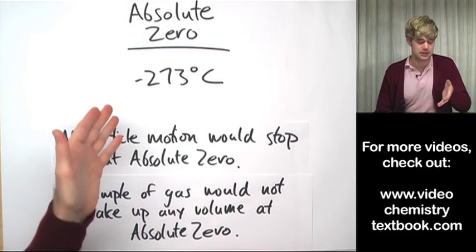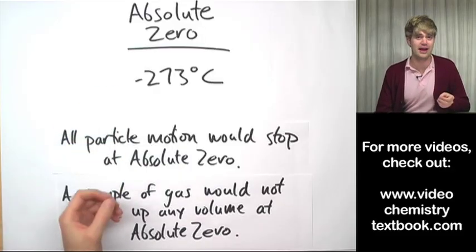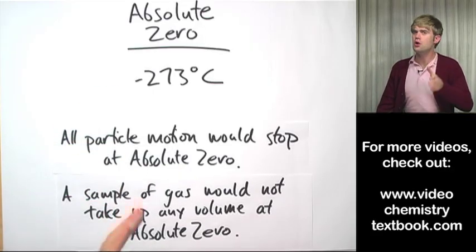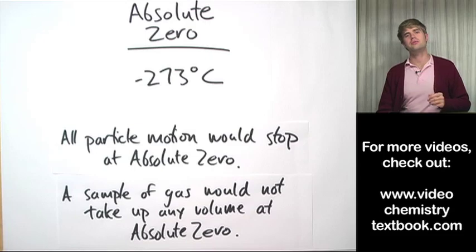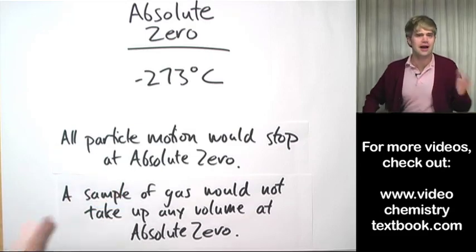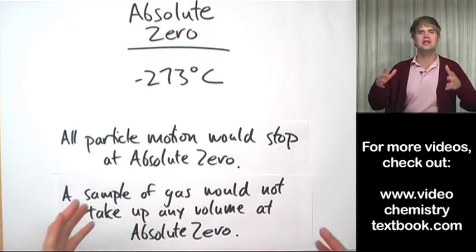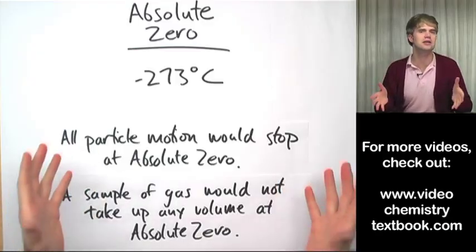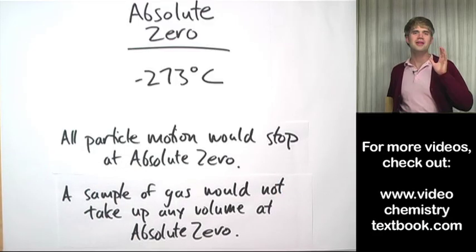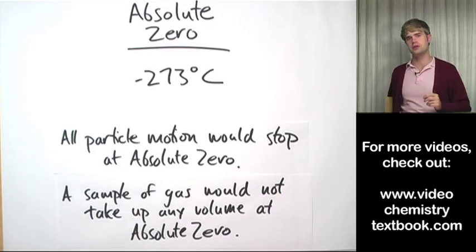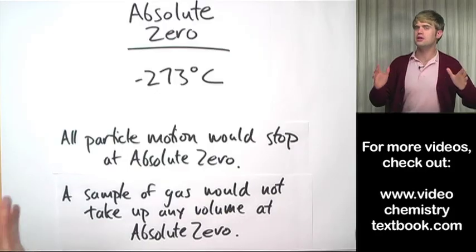So absolute zero is pretty crazy because it's so cold in fact that scientists know it exists but they've never been able to get it that cold in the laboratory. Even with the most sophisticated freezers and scientific techniques they have, they've gotten close but they haven't totally gotten it to absolute zero.